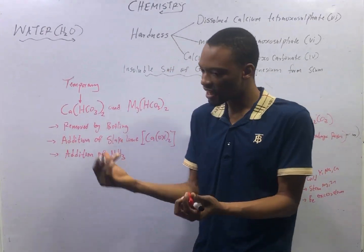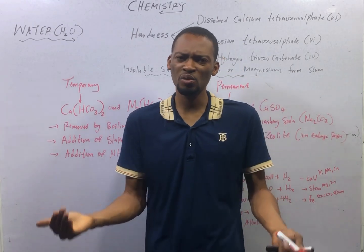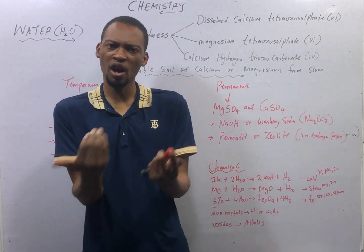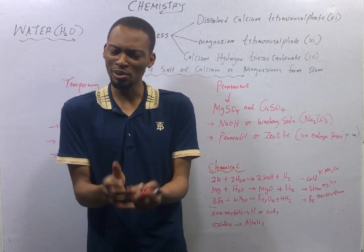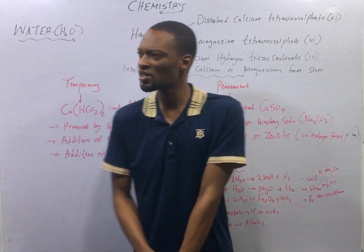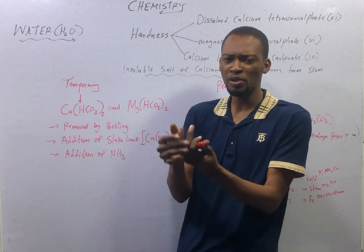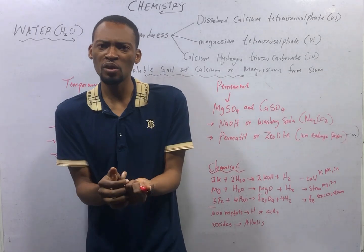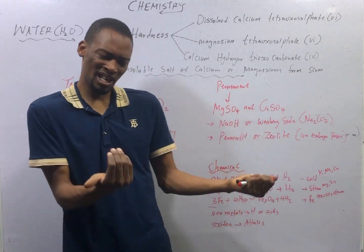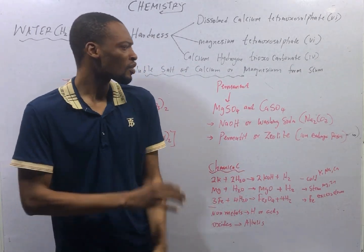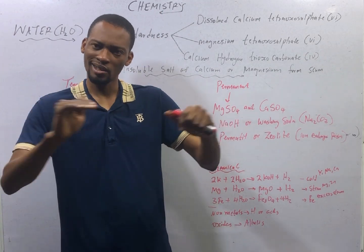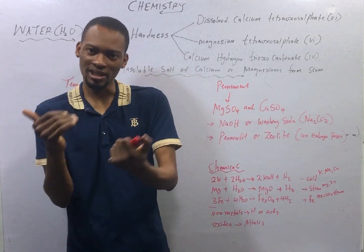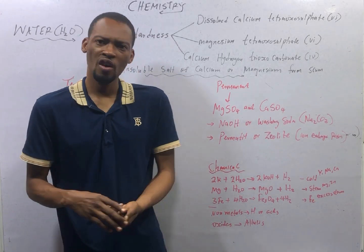The common water pollutants are refuse and sewage, oil spillage, and industrial and agricultural waste. The physical properties of water are: water is colorless, odorless and tasteless; it has a boiling point of 100°C and a melting point of 0°C. Water is neutral to litmus — neither acidic nor basic — and has a pH of 7.